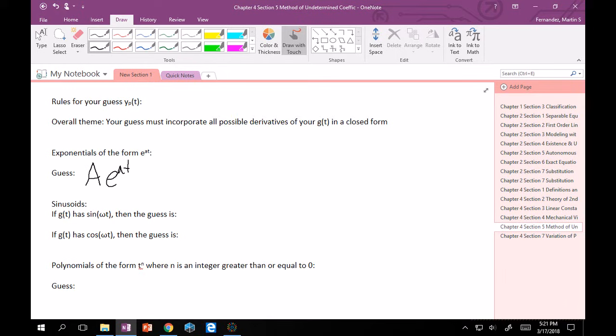And we have sinusoids. So, we're going to split it up into two. If g(t) has sine of ωt in it, then the guess is something. If g(t) has cosine of ωt, then the guess has something. I put them very close together because the guess for both of these is the exact same, and I want to stress this. When you take the derivative of sine, you get cosine. When you take the derivative of cosine, you get minus sine. Derivative of minus sine is minus cosine. Derivative of minus cosine is sine. So, they oscillate between sine and cosine when you take derivatives.